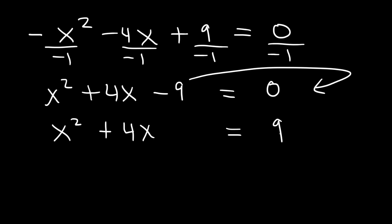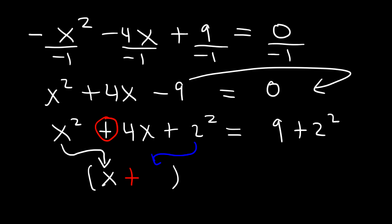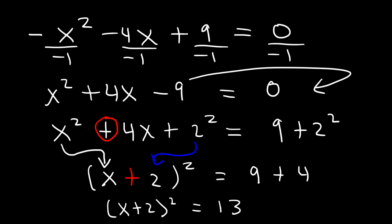Now let's complete the square. Half of 4 is 2, so we're going to add 2 squared to both sides. How can we factor the expression on the left? You can see everything you need. It's going to be x, and then whatever this sign is — plus — so x plus 2, squared. And on the right we have 9 plus 4. So this is x plus 2 squared equals 13.